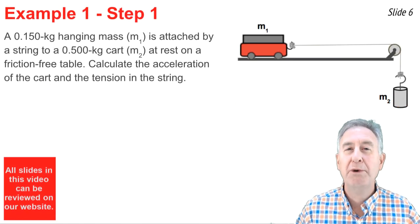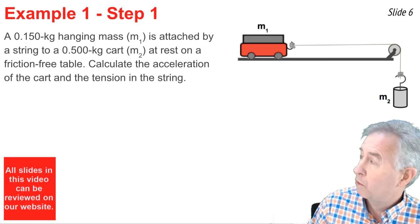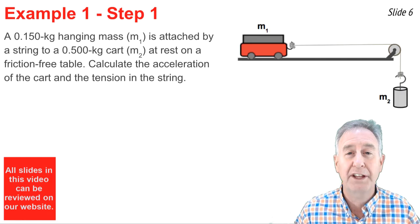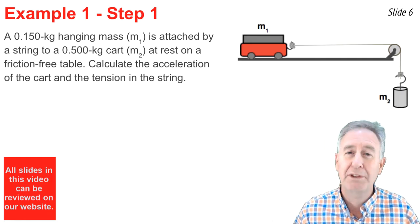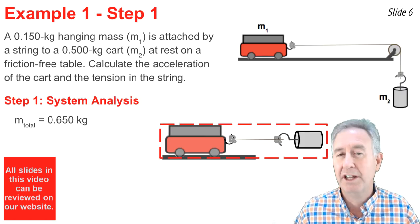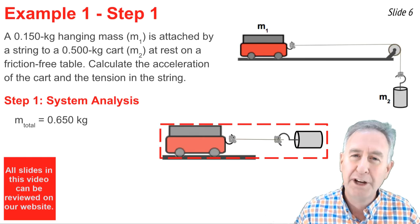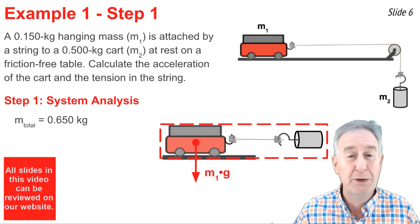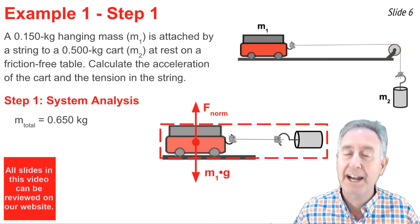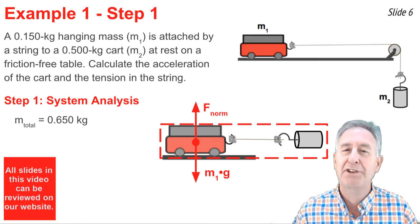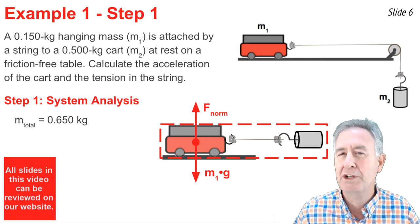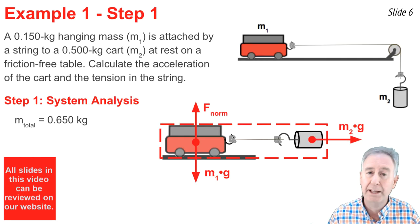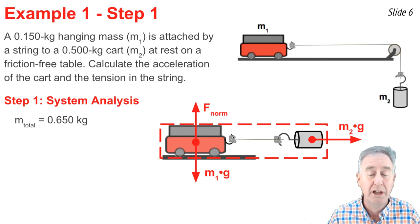Here's the first of two examples. A 0.15 kg hanging mass is attached by a string to a 0.50 kg cart at rest on a friction-free table. When the mass is released, they both accelerate, and we want to calculate the acceleration and the tension in the string. Step one is the system analysis. I take the system of cart and hanging mass and string and straighten it out, then draw forces: gravity on the cart M1G, the normal force balancing it, and gravity on the hanging mass M2G acting as a horizontal force.